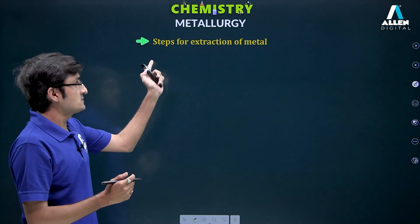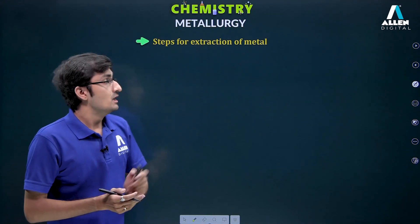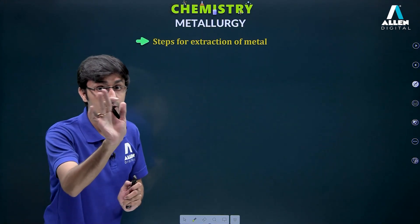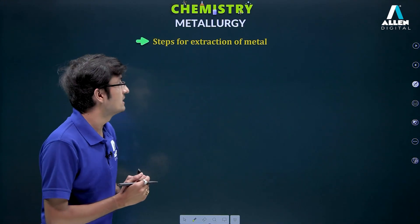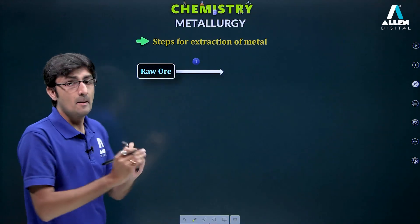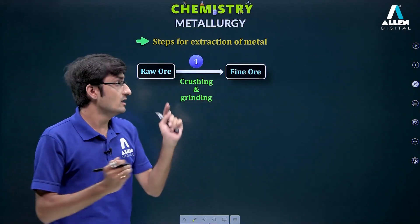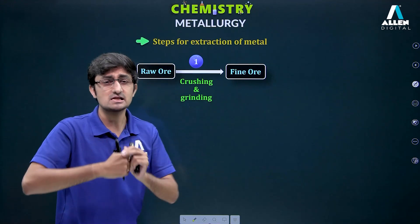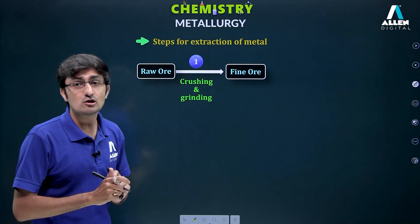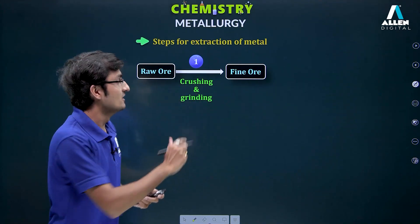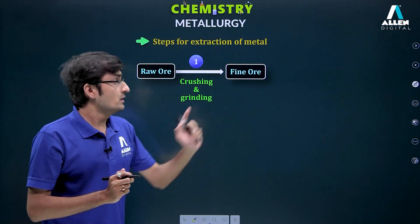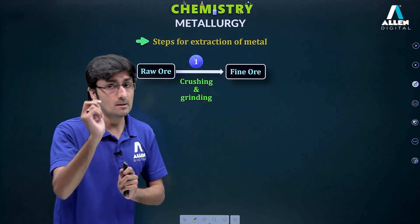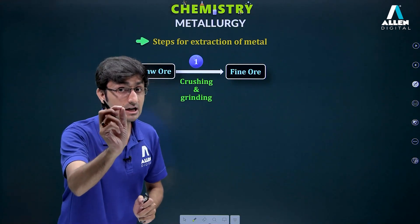First point: steps for extraction of metal. Naturally, metal is obtained from ores. The first step involves big ore particles — we crush them into small particles. Therefore, the process is named crushing and grinding. After that, we have fine ore or powdered ore.